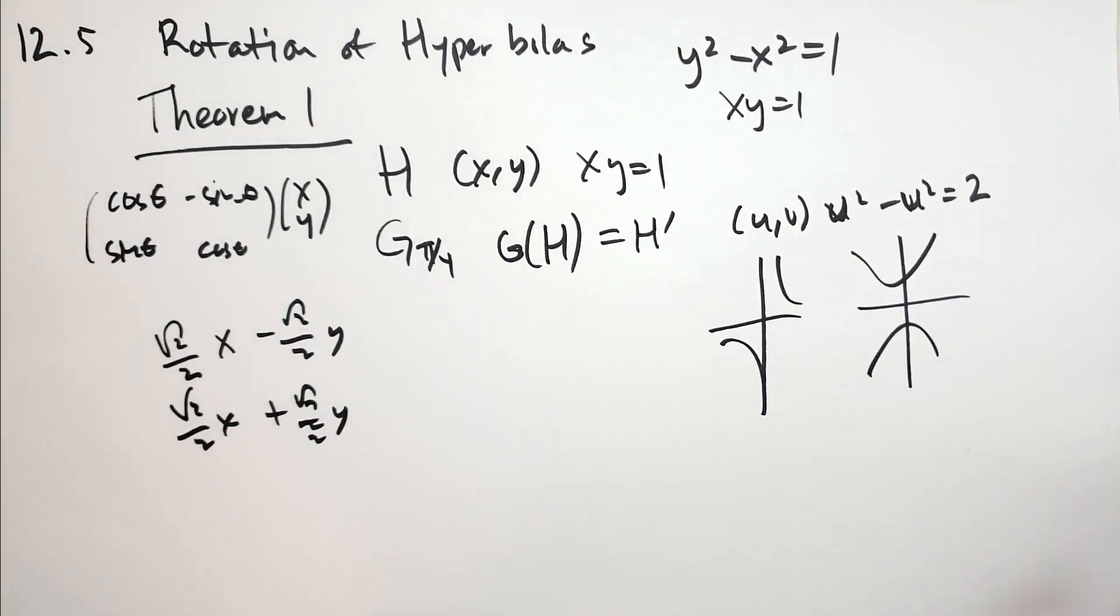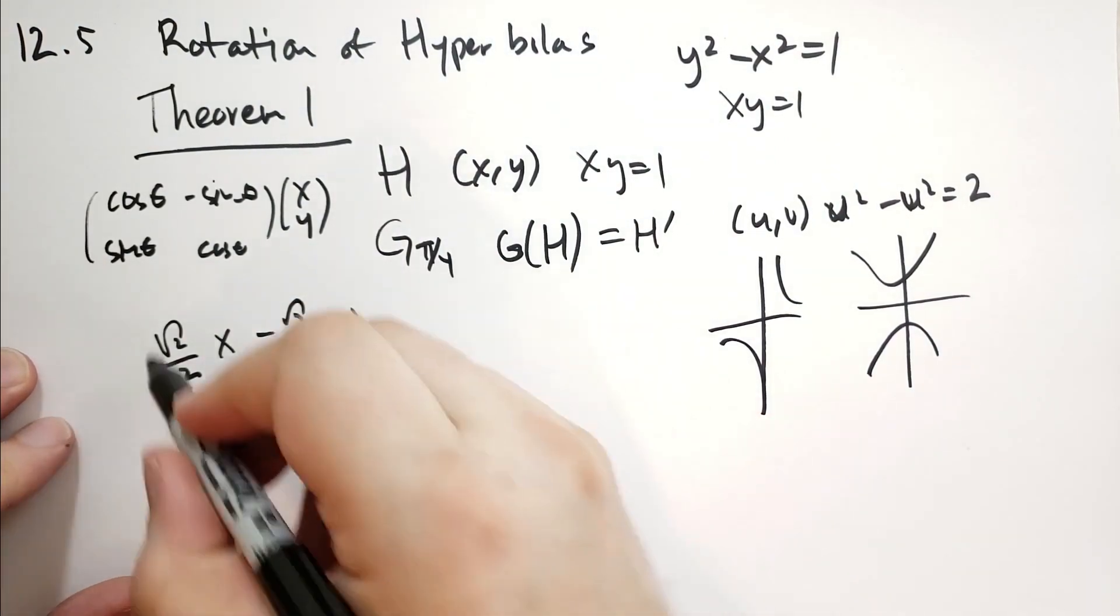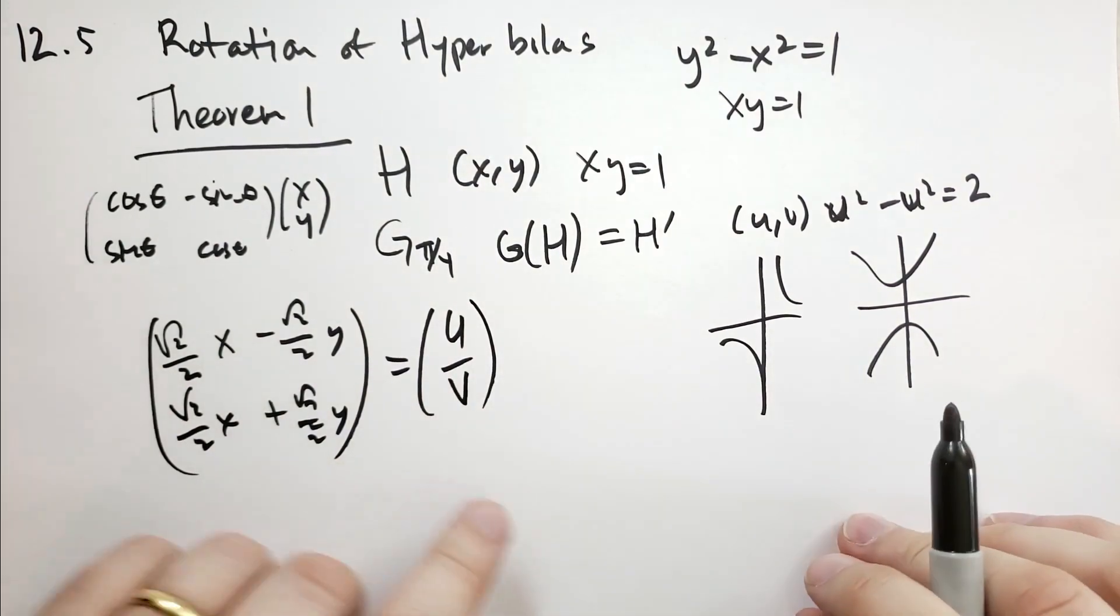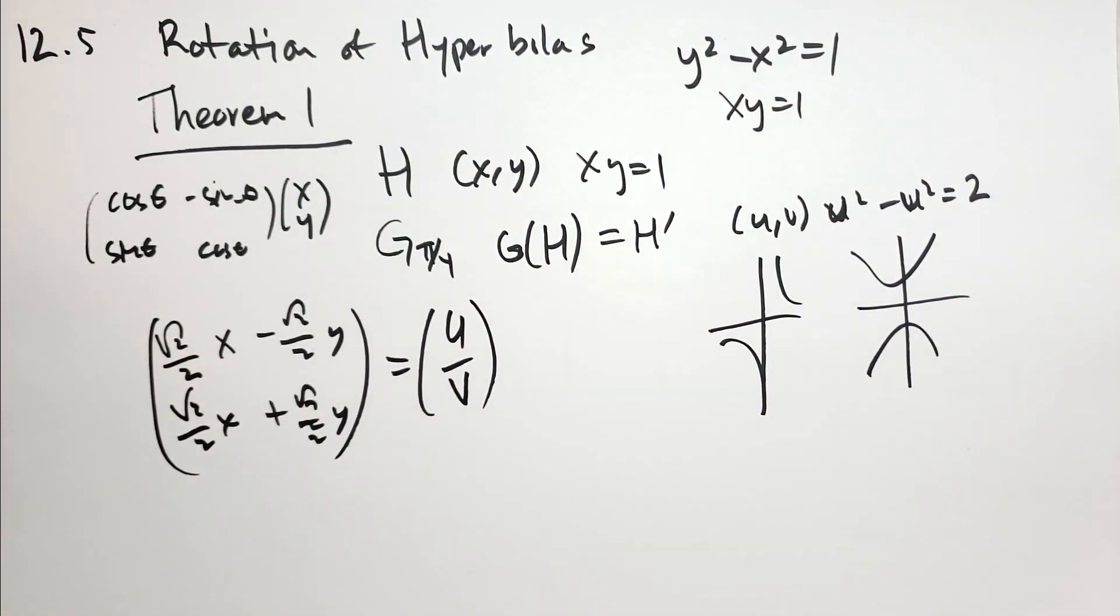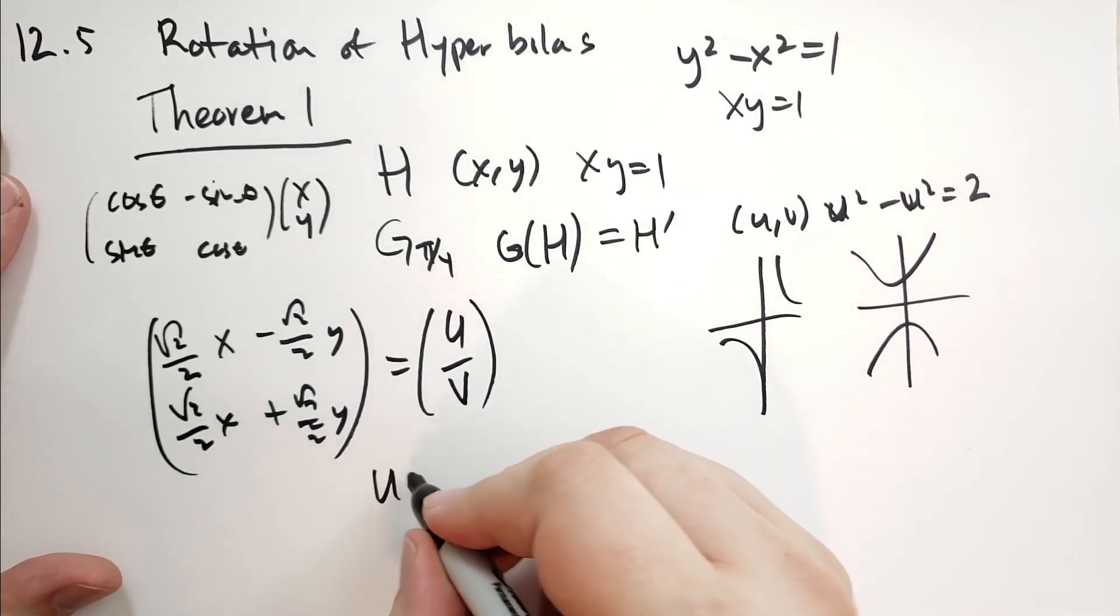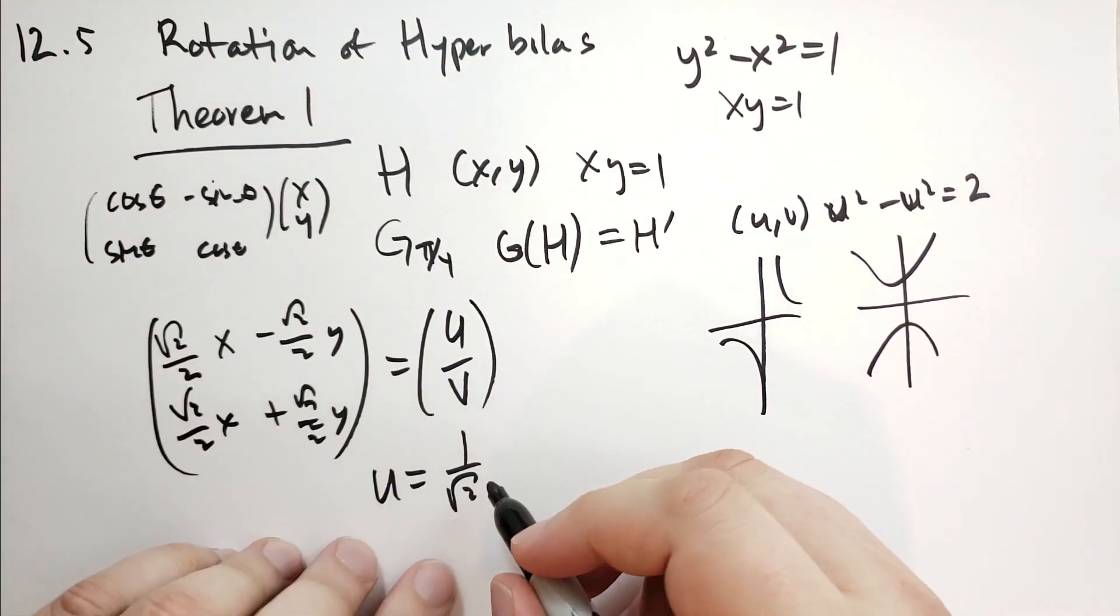And then he is going to say that these new points is going to equal u and v. So he writes this equation out this way, so he says u is equal to, and he changes it to 1 over root of 2, he's just multiplying the top and the bottom by root of 2 over 2, root of 2 over root of 2, and he has 1 over 2.